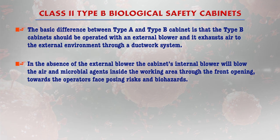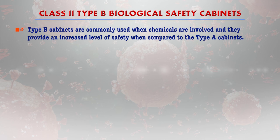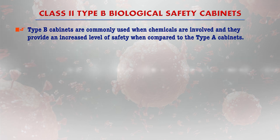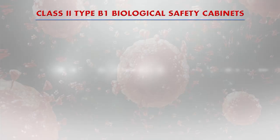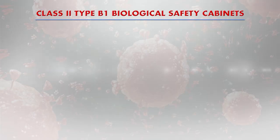In the absence of external blowers, the cabinet's internal blower will blow air and microbial agents inside the working area through the front opening towards the operator's face, posing risk and biohazards. Type B cabinets are commonly used when chemicals are involved in experiments and provide an increased level of safety compared to type A cabinets. Different biohazard levels call for different types of cabinets.